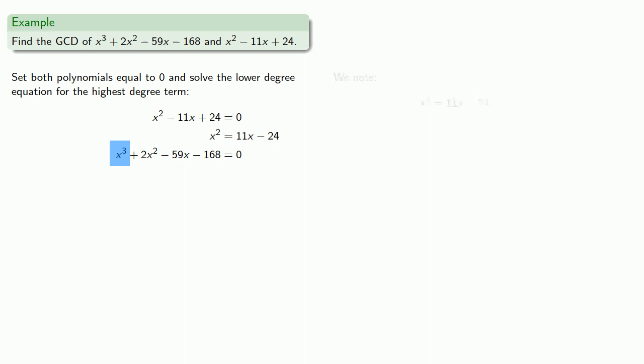But what about the x-cubed term? To begin with, we might note that if we multiply all of our terms by x, we get... And while this expression has an x-squared in it, we know what x-squared is equal to. So we can substitute... And simplify.